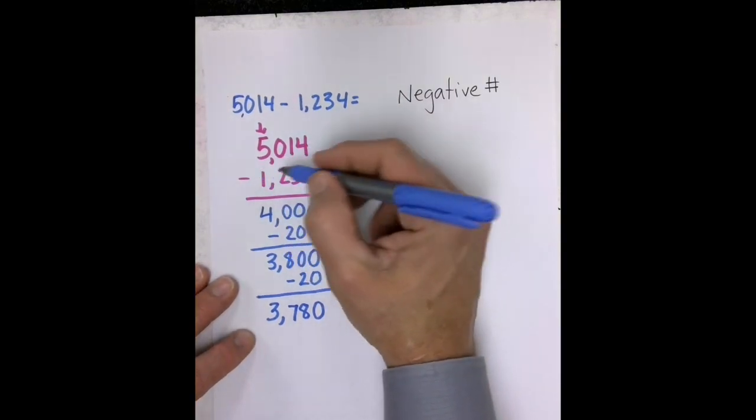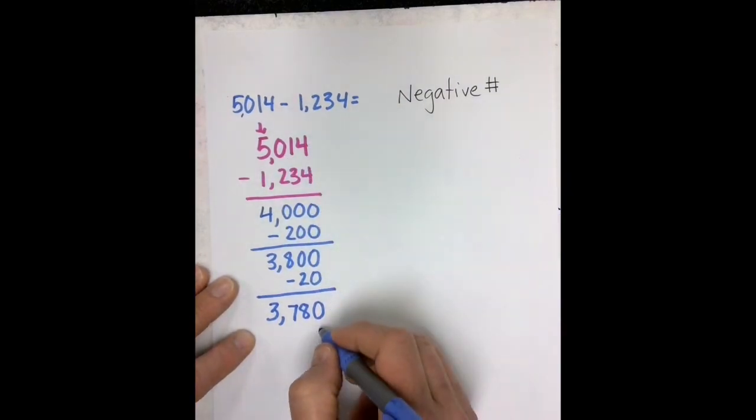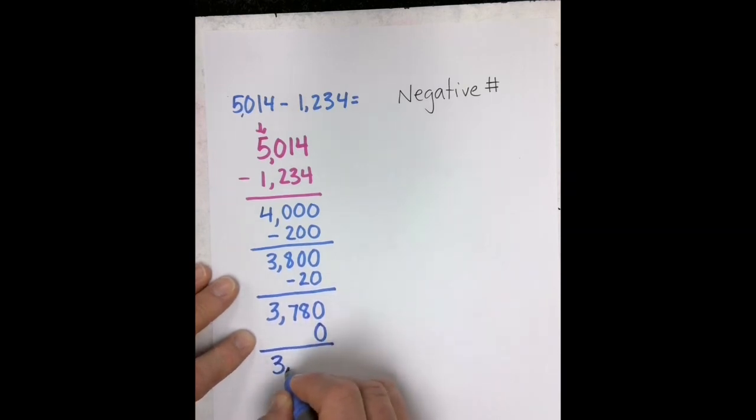Finally, we get to 4 minus 4, and that answer is 0. And we combine that for a total of 3,780.